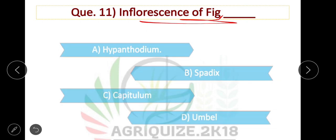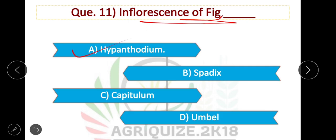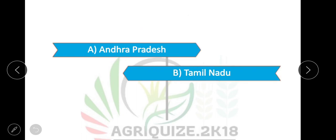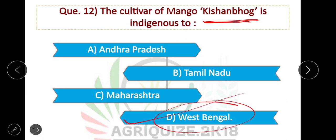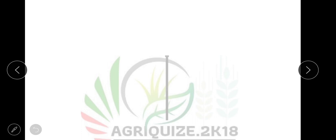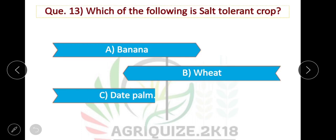Question number 12: The cultivar of mango Krishnabhog is indigenous to — the correct answer is that Krishnabhog is a mango indigenous to West Bengal.